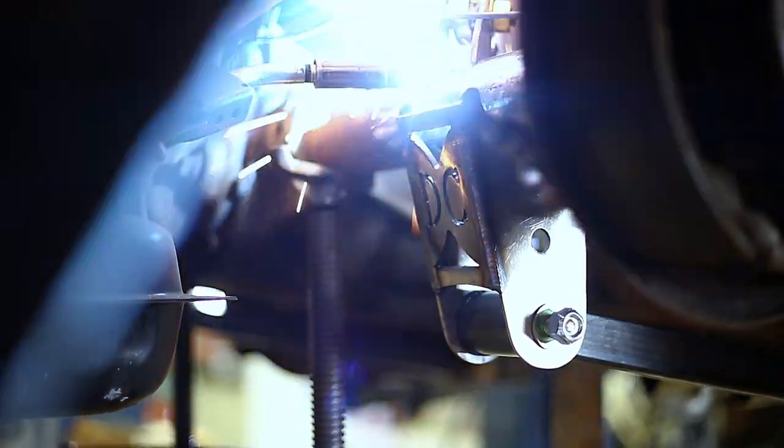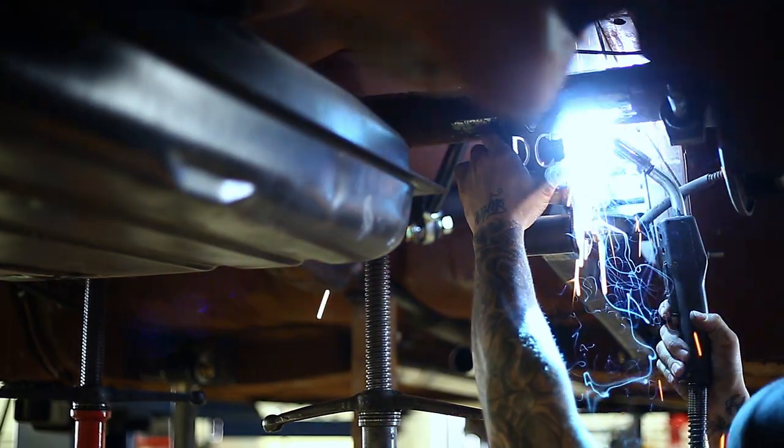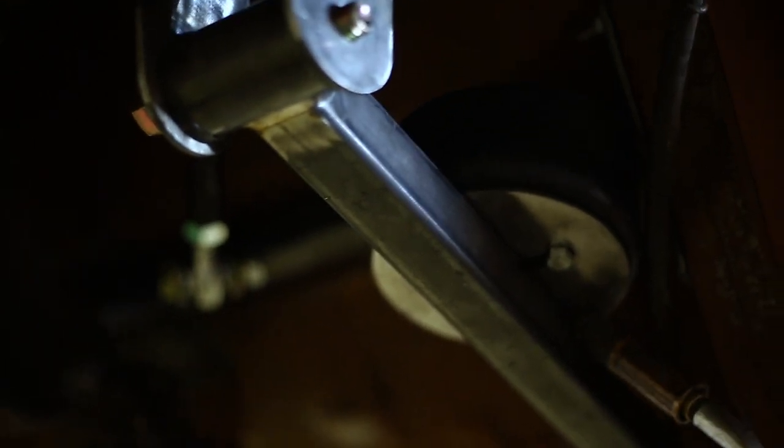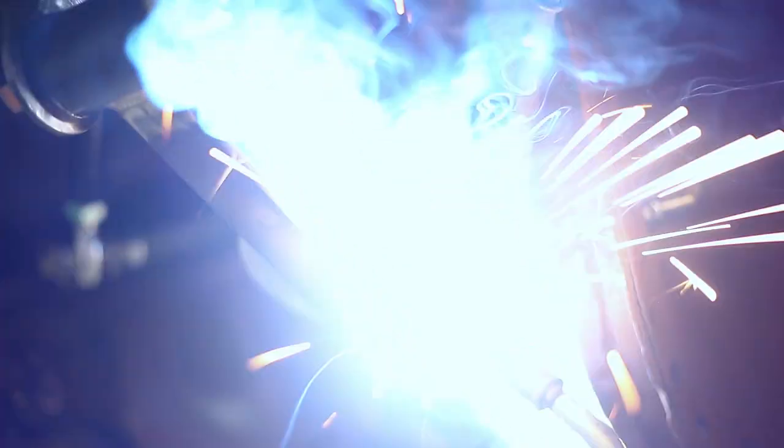Once the rear end is straight, the upper and lower four-link mounts can be welded on. With the lower bag plate attached to the bag, bolt the bag to the crossmember and lay out the suspension. Now you can tack the plate to the lower link.